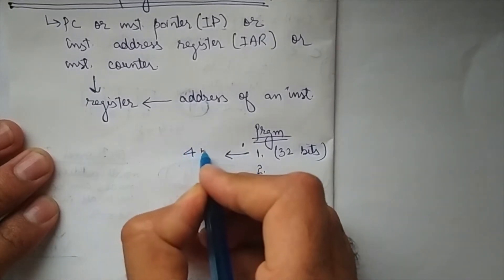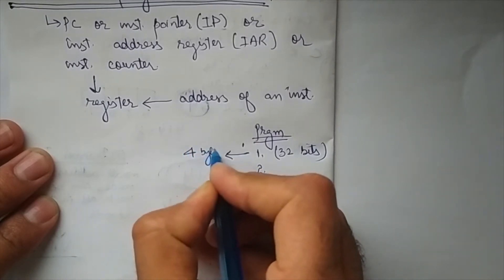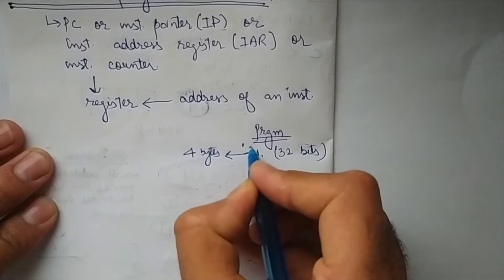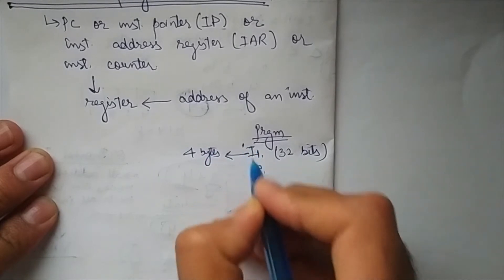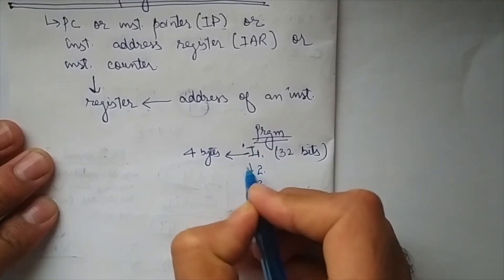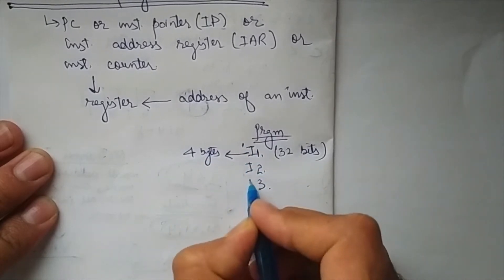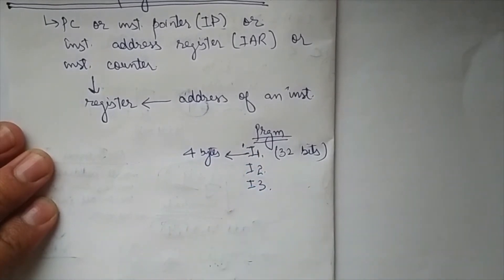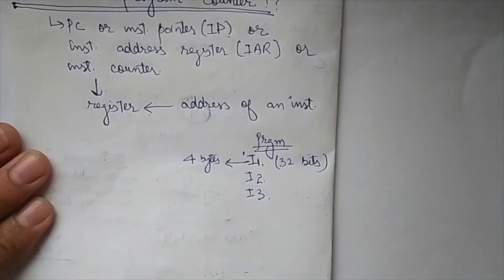Each instruction is of 4 bytes. So instruction I1, instruction I2, instruction I3 — this is our program with three 4-byte instructions.